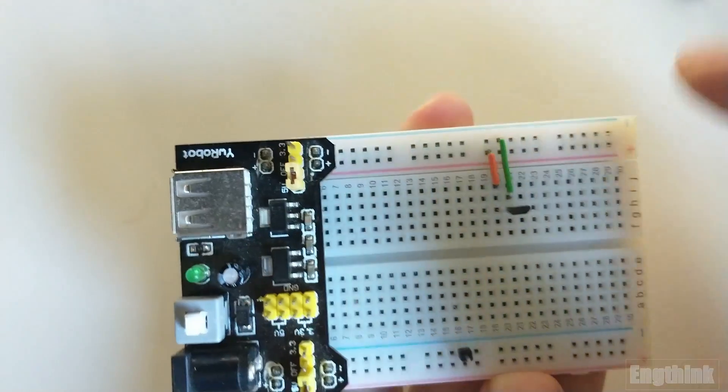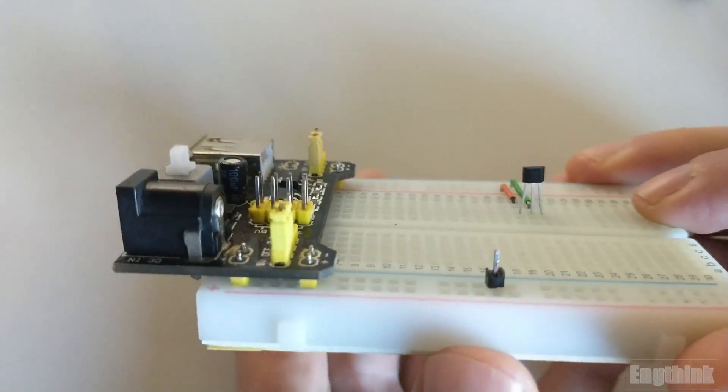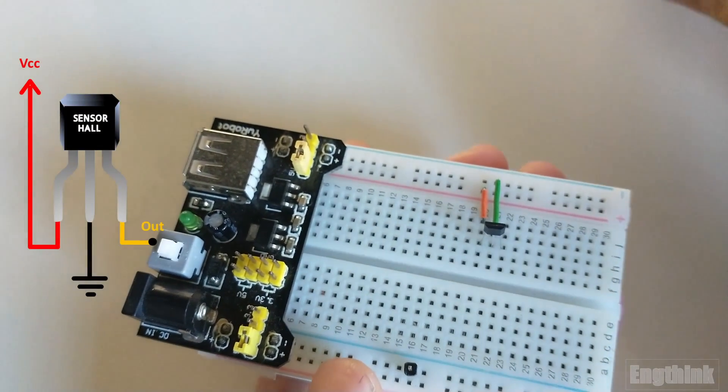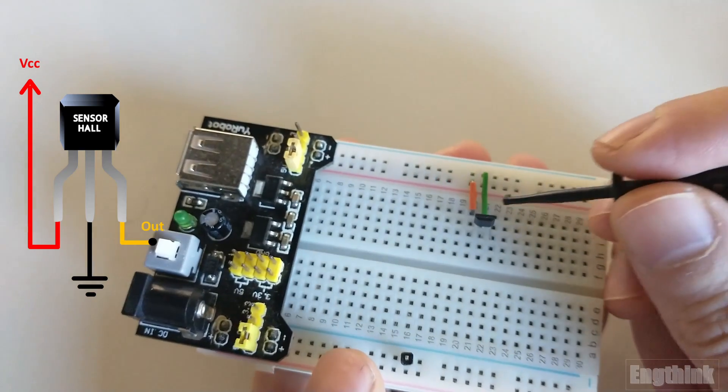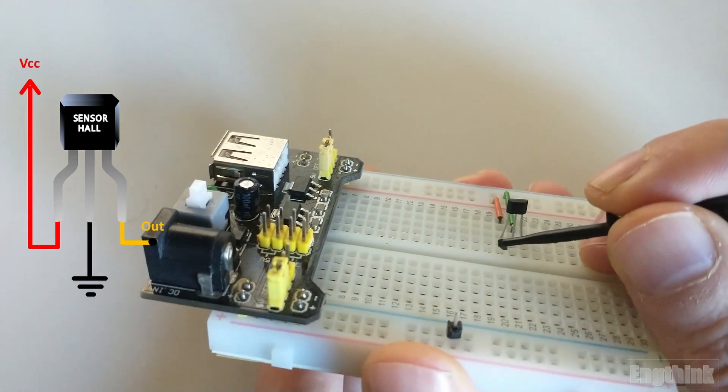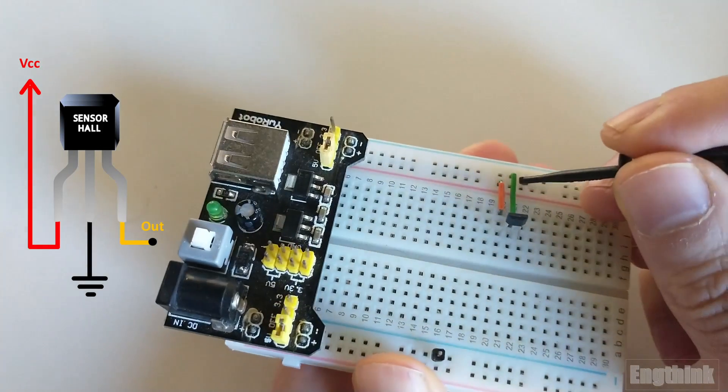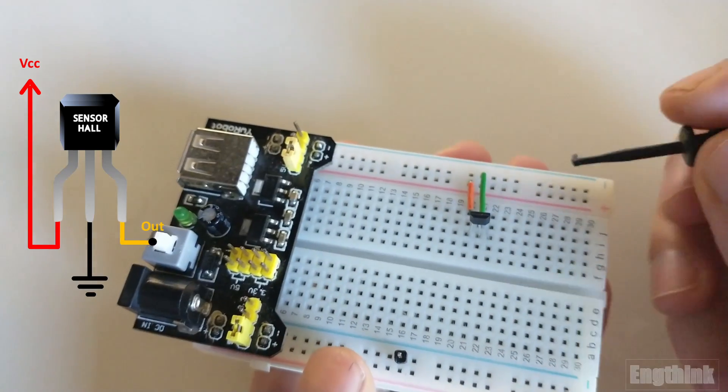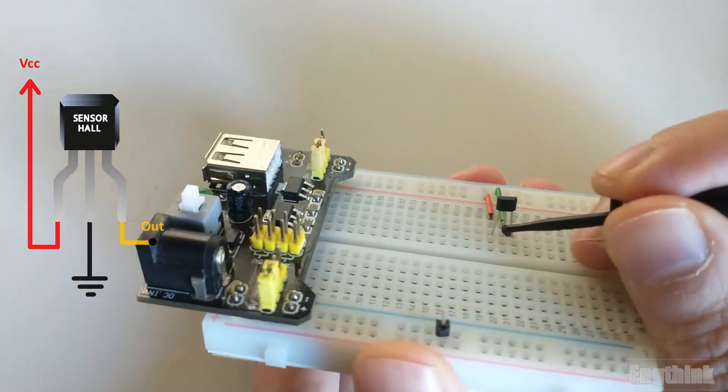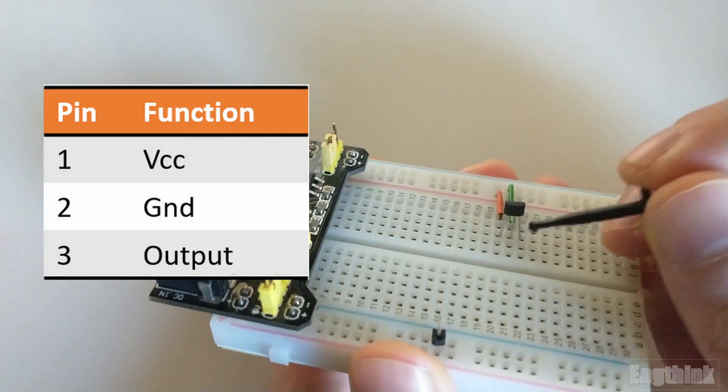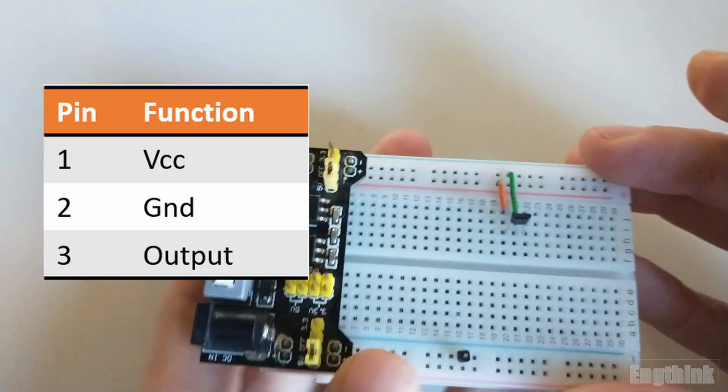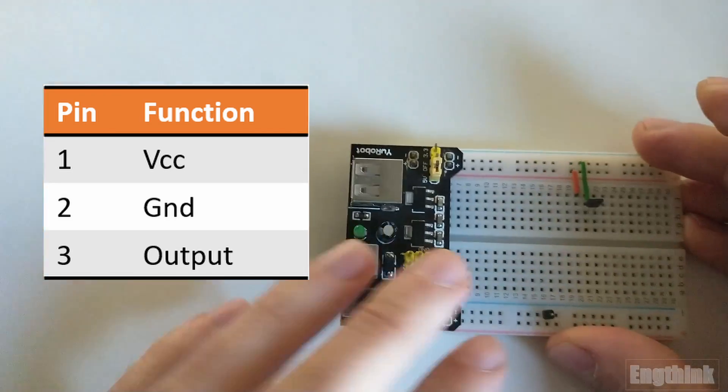Let's review the Hall effect sensor pins once more. On the left, we have pin number 1, labeled as VCC, where the orange wire is connected for the positive supply of the sensor. Moving to the middle pin, pin number 2, we have connected the green wire for the negative supply. Finally, on the right, we find pin number 3, serving as the output of the sensor. This is where we can obtain measurements from the sensor output.